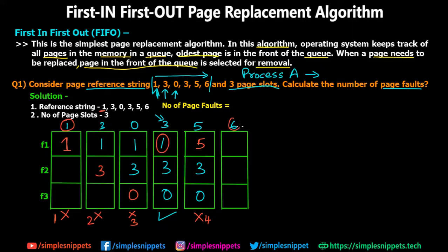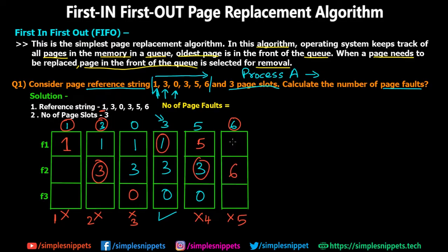For the last iteration, page 6 is requested by the CPU. Page 6 is not in any of the frames, so a fifth page fault is generated. According to FIFO, the next oldest page after 1 is page 3, which was loaded second and is still in memory. So page 3 is swapped out and page 6 takes its place. Pages 5 and 0 remain unchanged.